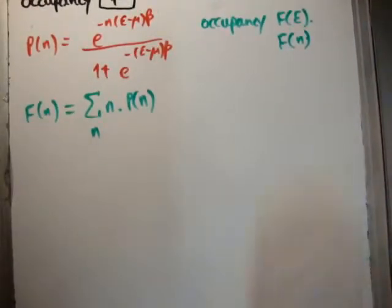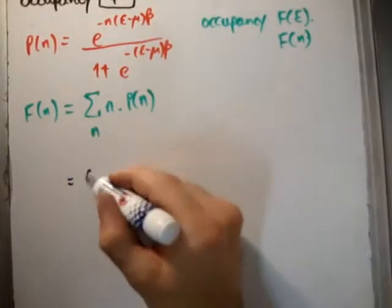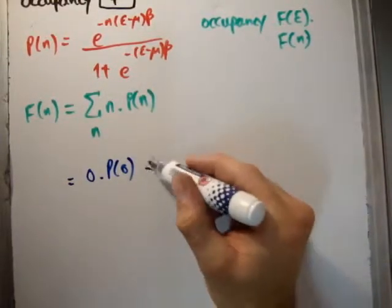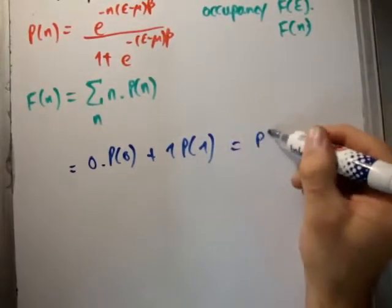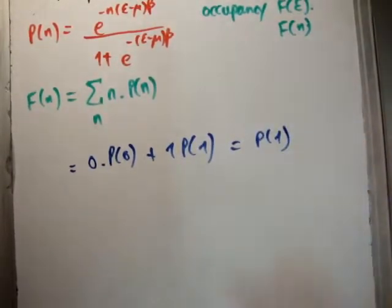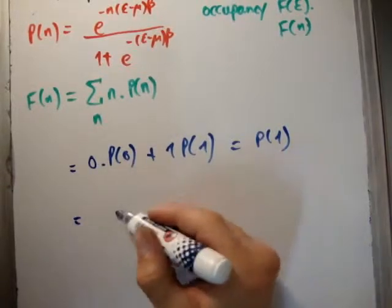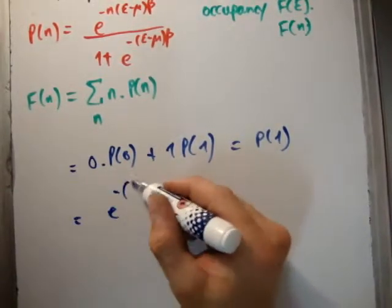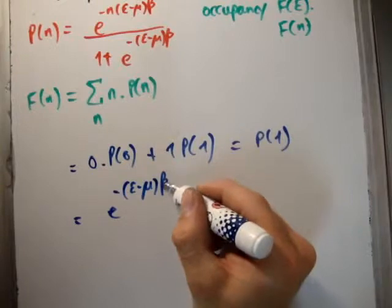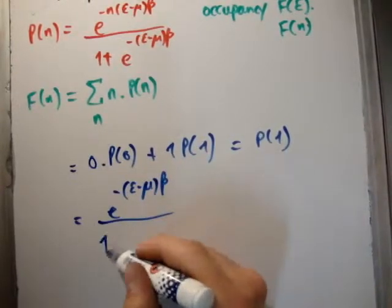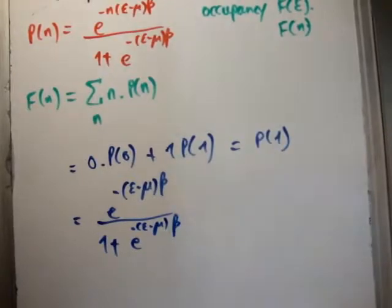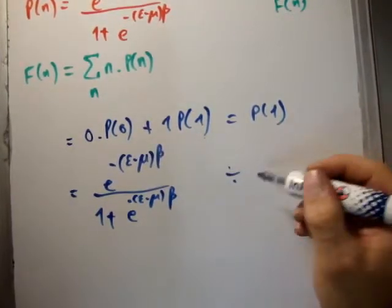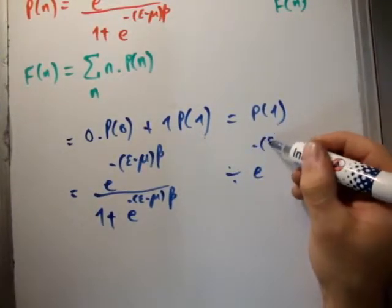Plug in what we have: that becomes 0 times the probability of 0 plus 1 times the probability of 1, which equals the probability of 1. So that's equal to e to the minus (ε - μ)β divided by 1 plus e to the minus (ε - μ)β. If we divide across by e to the minus (ε - μ)β,